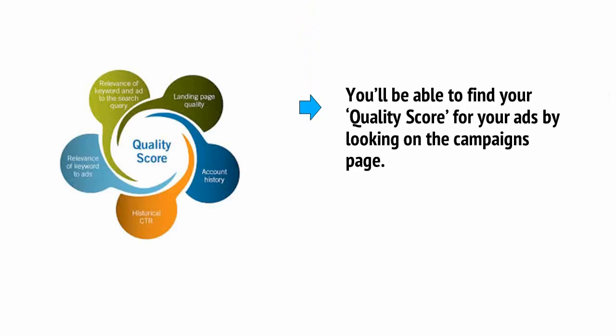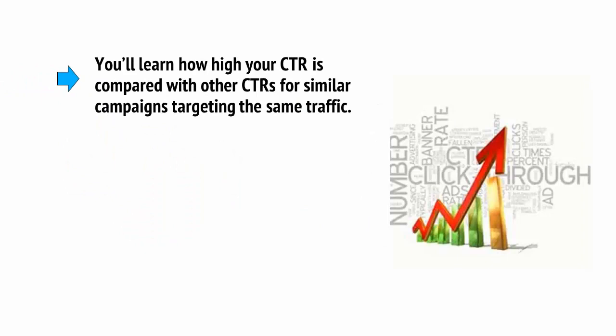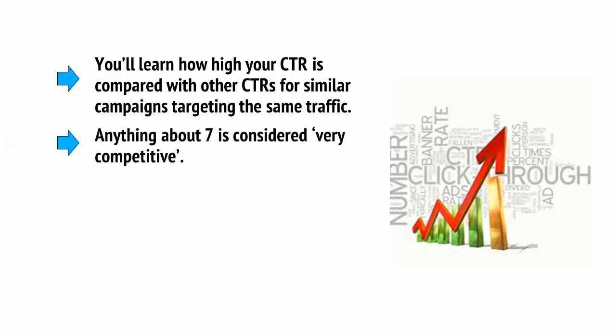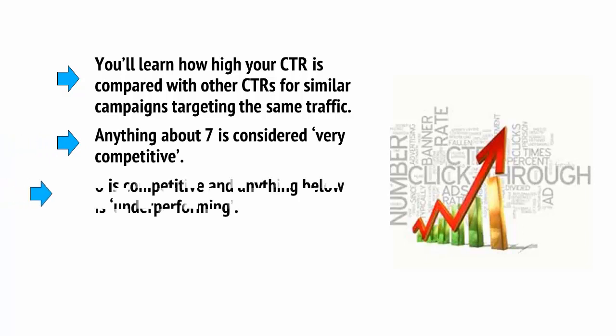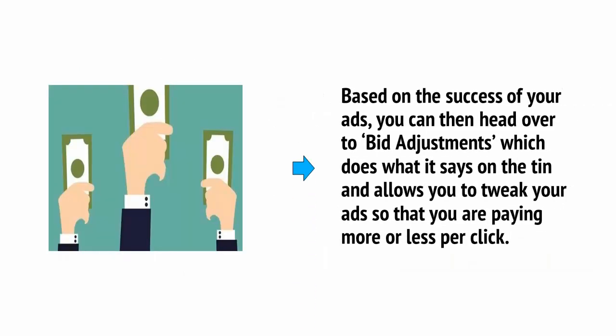For example, you'll be able to find your quality score for your ads by looking on the campaigns page. This gives you a score from 0 to 10 showing how your ad is performing. You'll learn how high your CTR is compared with other CTRs for similar campaigns targeting the same traffic. Anything above 7 is considered very competitive, 6 is competitive, and anything below is underperforming. If you have a blank dash where your score should be, it means Bing doesn't have enough information yet. Based on the success of your ads, you can then head over to Bid Adjustments, which allows you to tweak your ads so that you'll pay more or less per click.